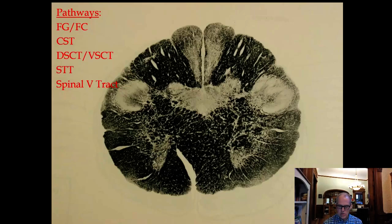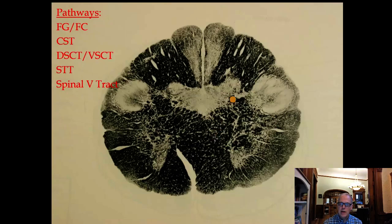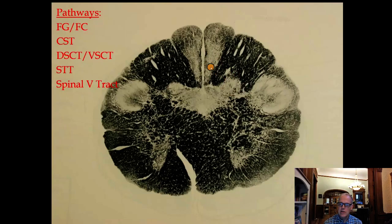In the lower medulla, this is where the pyramids cross — you can make an X right here. This is the decussation of the medullary pyramids, where the all-important crossing of the corticospinal tract occurs. Back in this part of the medulla we still see the dorsal columns: the fasciculus gracilis and fasciculus cuneatus. But now we're in the medulla, and the white area here is the nucleus gracilis and nucleus cuneatus — the all-important synapse for vibration and proprioception.